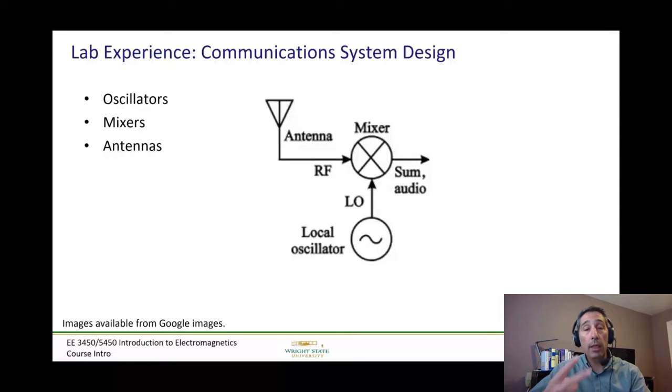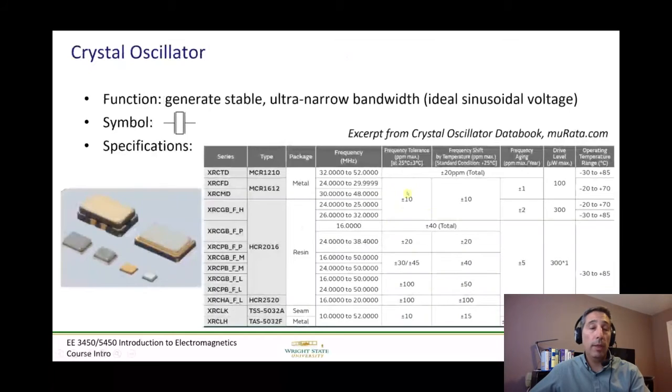So we're going to have two main lab experiences. One is to learn how to design a COM system. We'll learn about the different components like the antenna, the mixer, the oscillator. These are the electric schematics, by the way. And then we'll learn about the different pieces and their particular specifications. How do you pick one from the other? How do you read these charts?